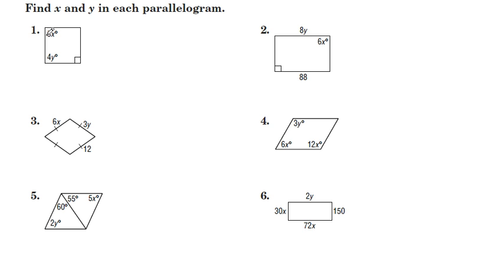For number one, we have a quadrilateral which happens to look like a square, but we don't know for sure. We do know that it is a parallelogram. One of the properties of parallelograms is if you have one right angle, you have four right angles. So to solve for x and y, we can set each of those equal to 90.